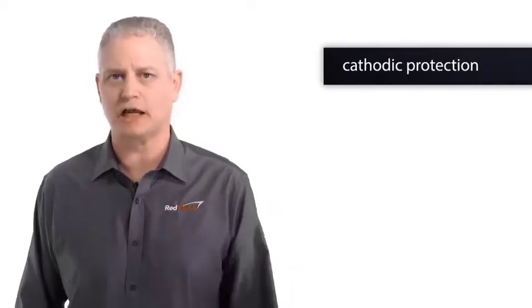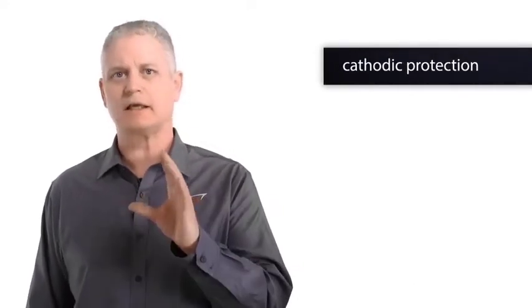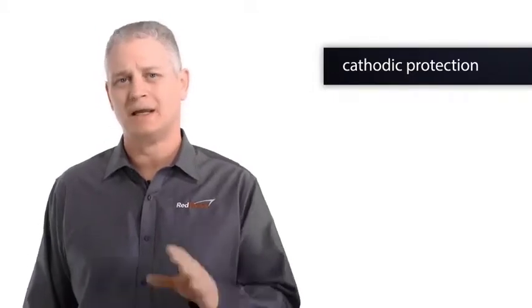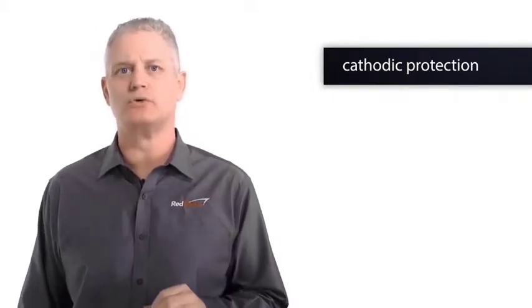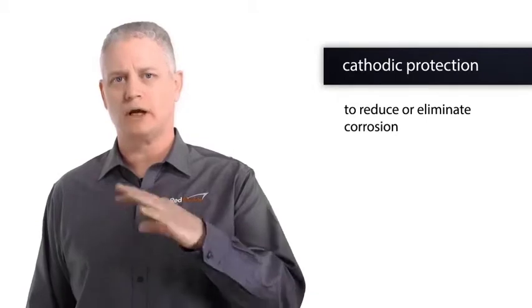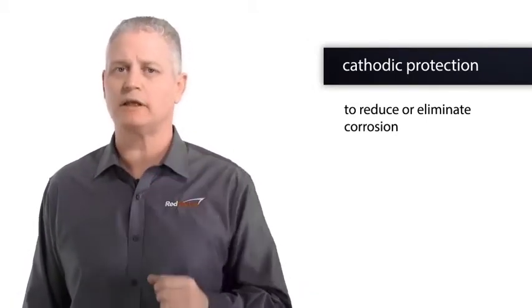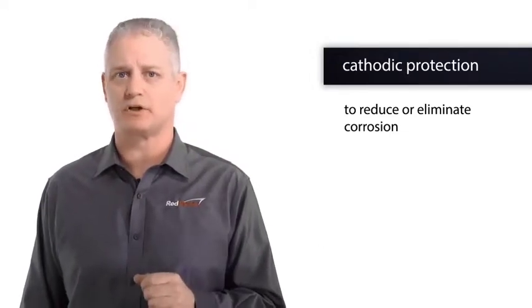Now one of the things we want to talk about is cathodic protection. Basically, cathodic protection is one of the methods you're going to use, or a company or operator would use, to reduce or hopefully eliminate corrosion in a pipeline. You have two different types of cathodic protection.